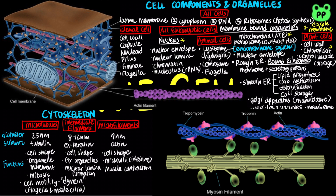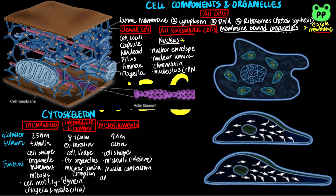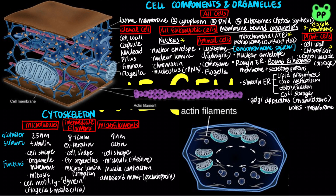Localized contraction brought about by actin and myosin also drives amoeboid movement, which is a crawling-like type of movement accomplished by protrusion of cytoplasm of the cell, involving the extension and contraction of cellular extensions known as pseudopodia. In plant cells, actin-myosin interactions also drive cytoplasmic streaming, which is the circular flow of cytoplasm within cells that speeds distribution of materials within the cell.